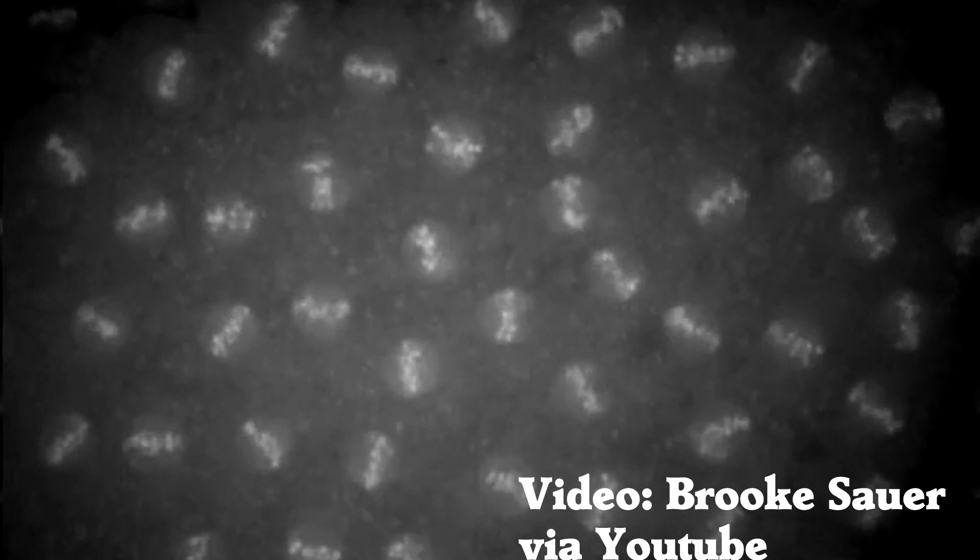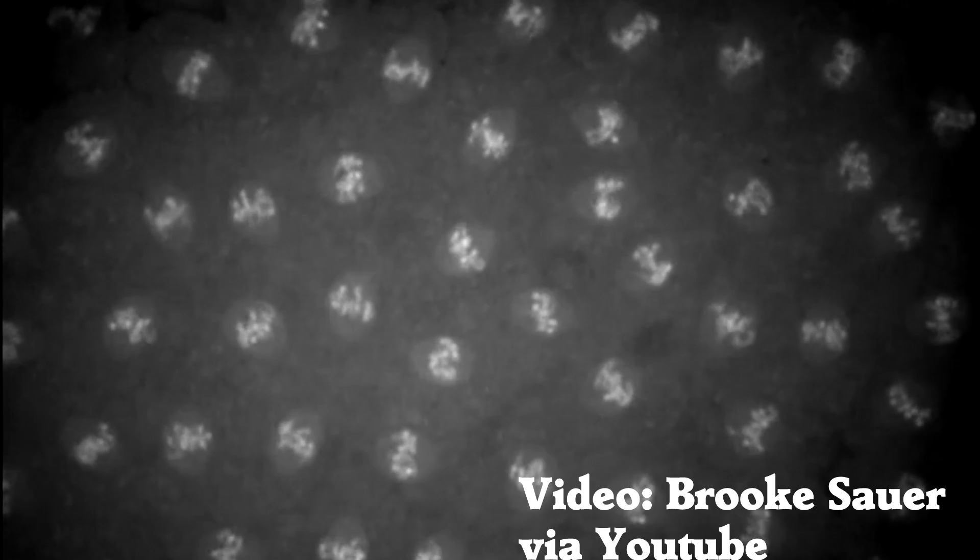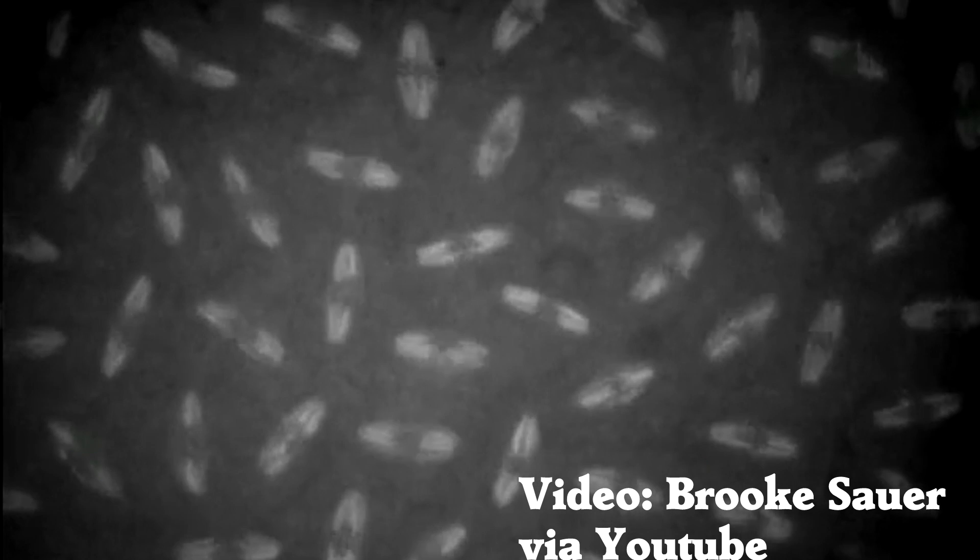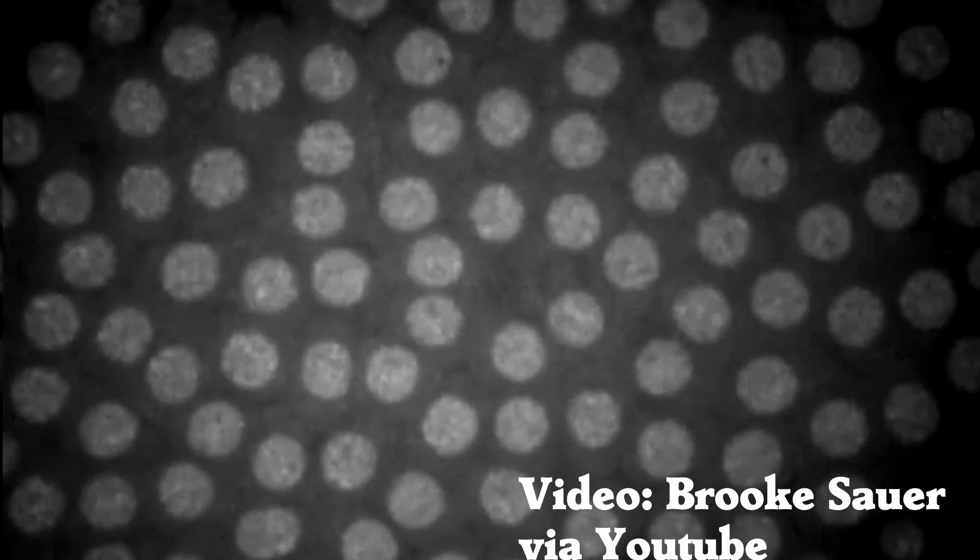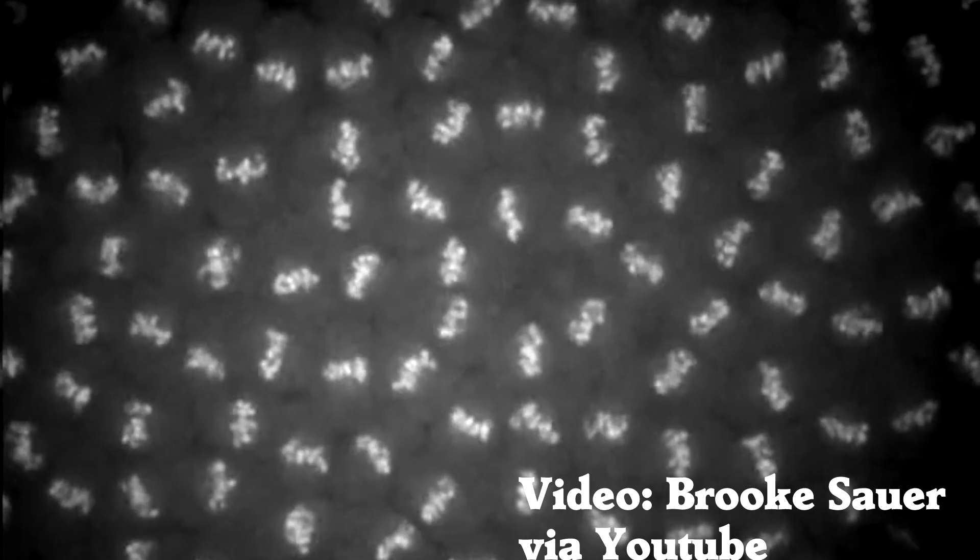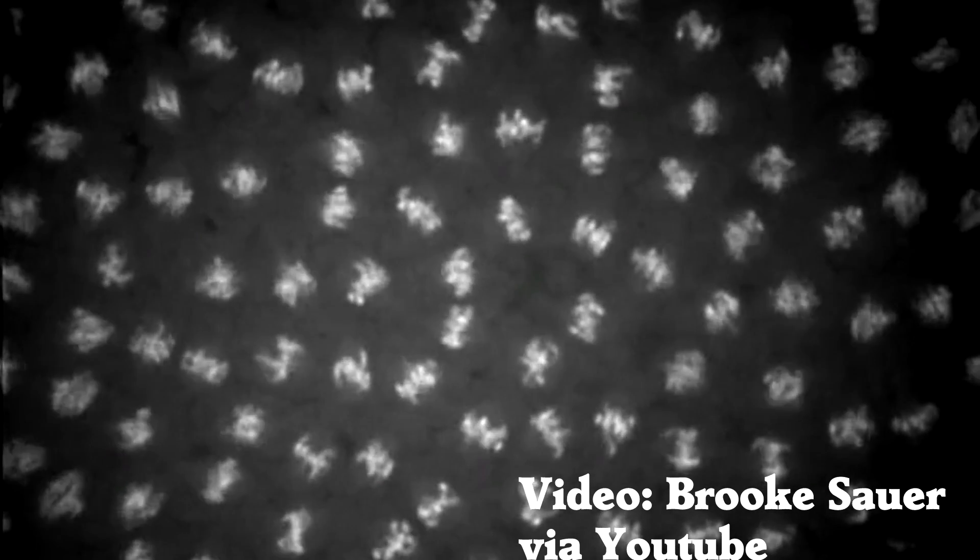Your cells are copying information faster than a procrastinating student on the day their 20-page final essay is due. And they copy amazingly well! We are still figuring out the numbers, but it's something like 60 errors during this copying. And your cells have error-checking molecules that come along afterwards and fix almost all of those errors. Okay, now let's talk about those mutations.